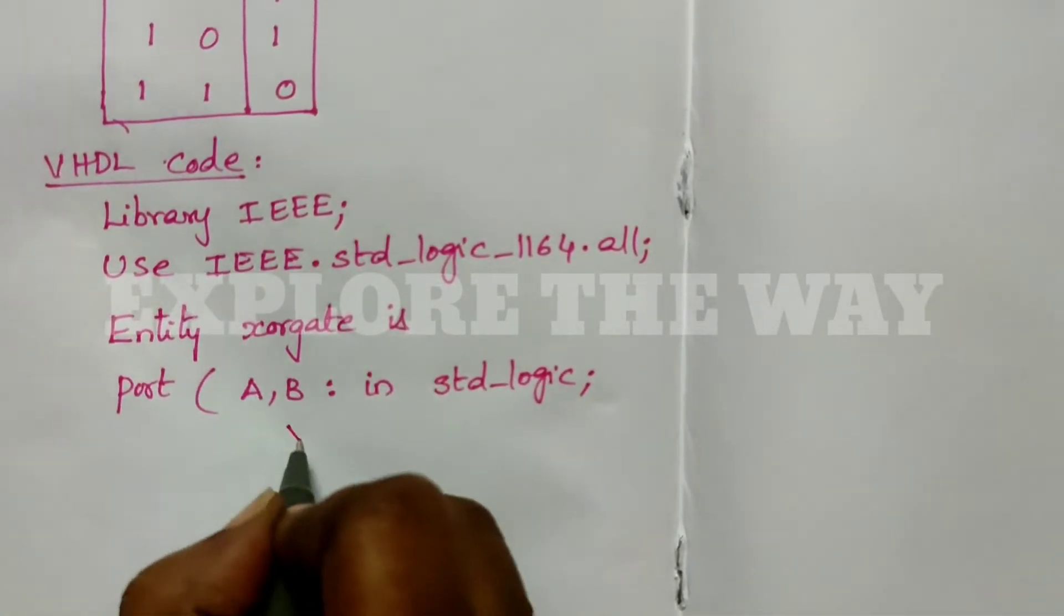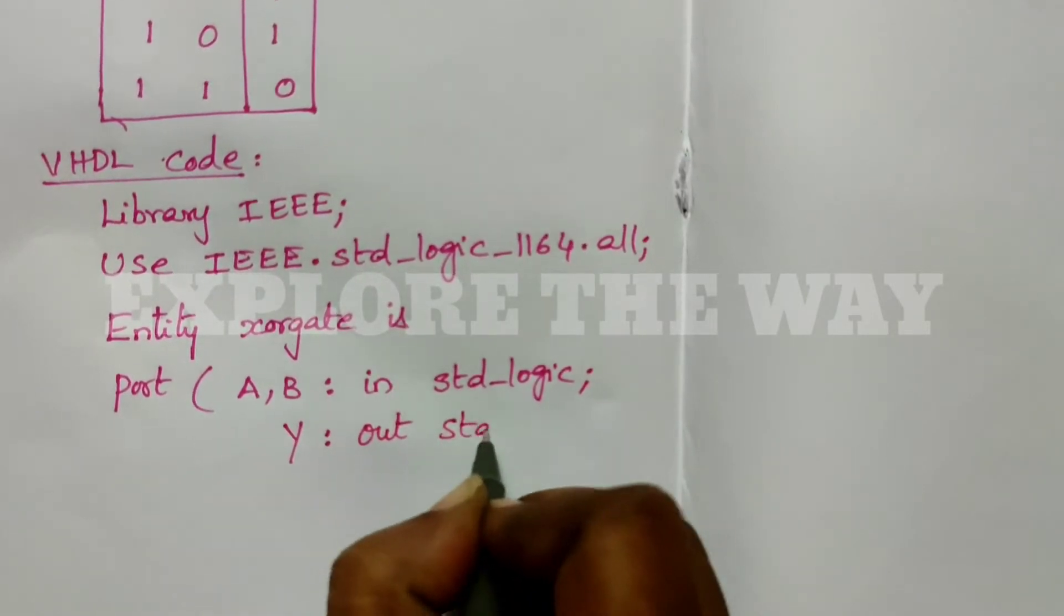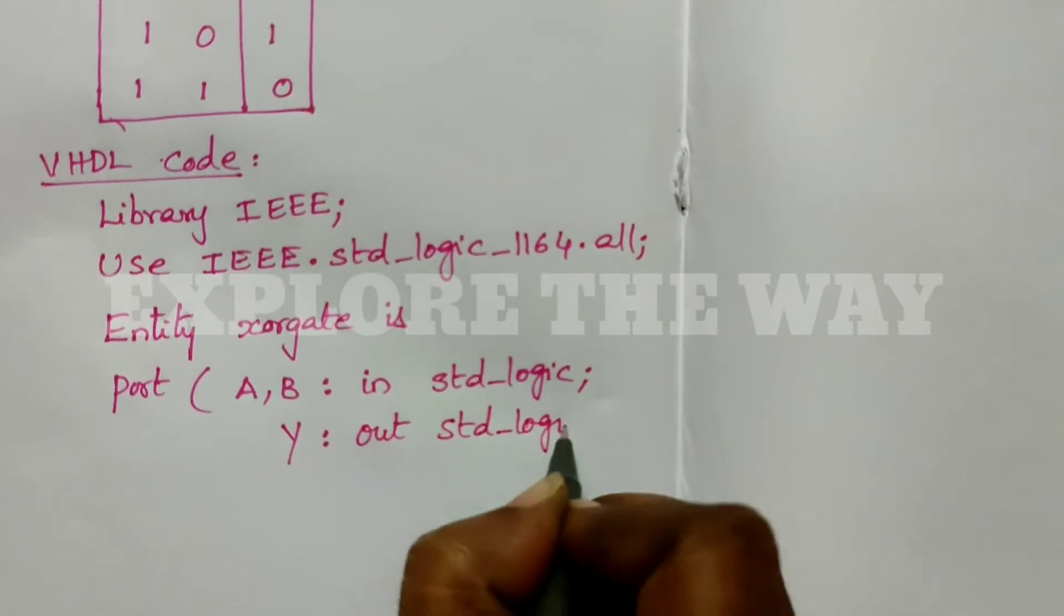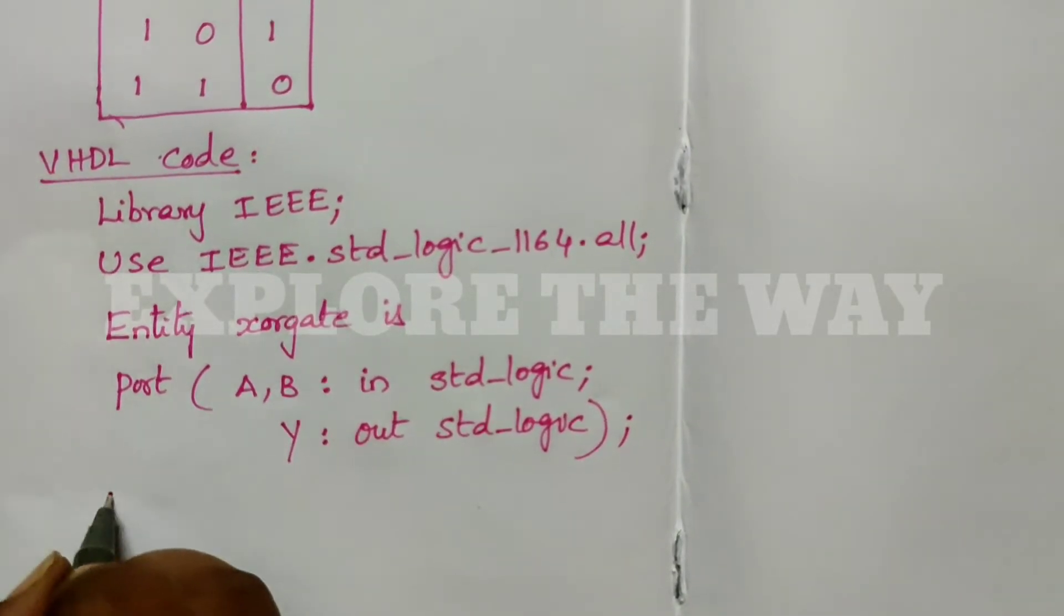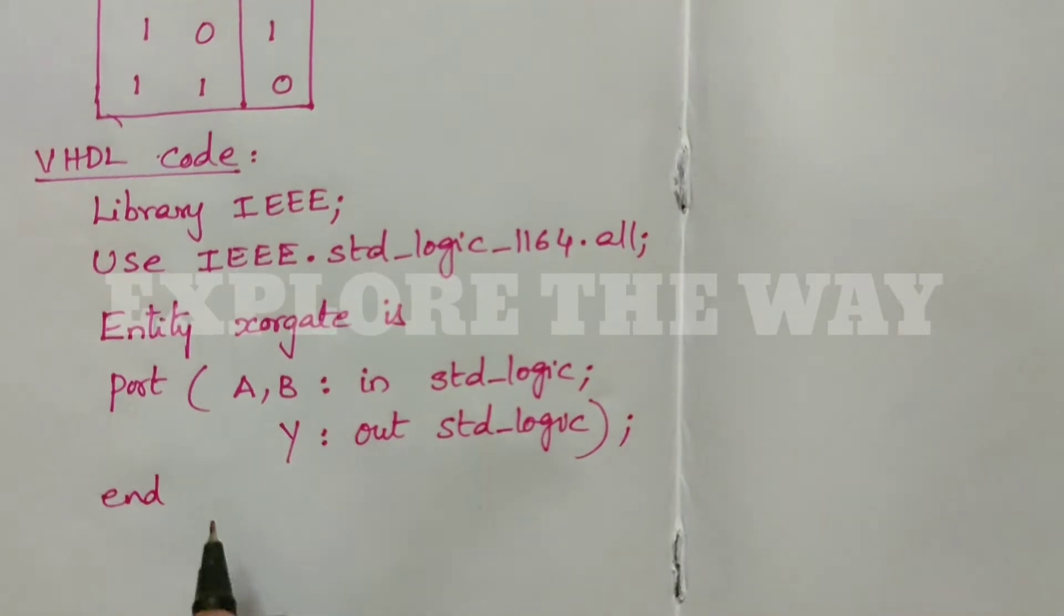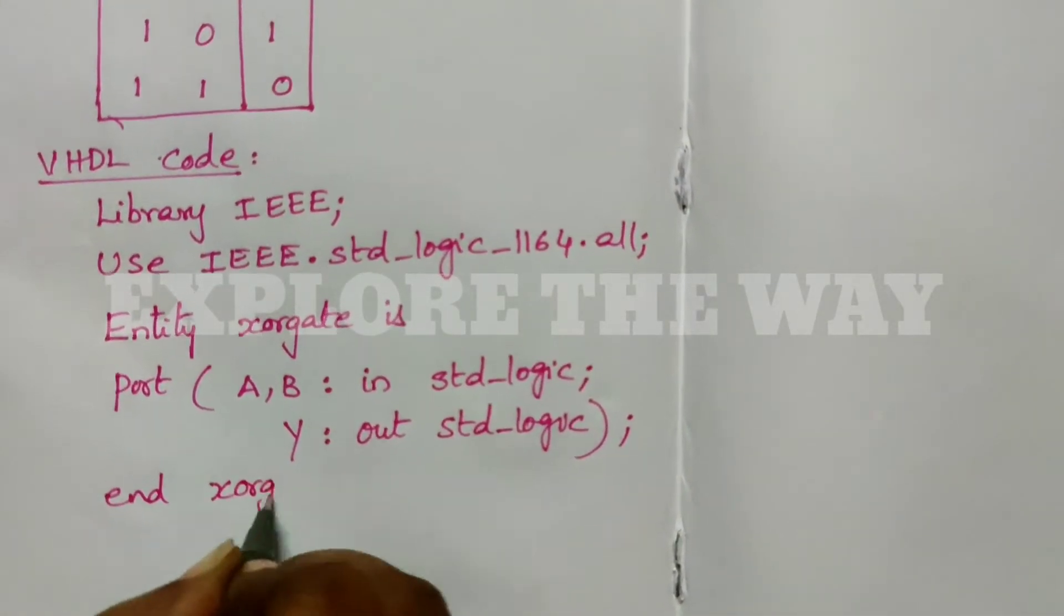And coming to Y, Y is the output: out std_logic. You can close the bracket and put a semicolon, and then end the entity. End xorgate.